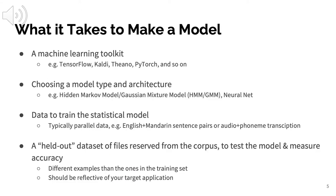To build a speech recognition system, the first thing you need is a machine learning toolkit — there are many available, such as TensorFlow, Kaldi, and PyTorch. Beyond the toolkit, you need to choose a model type and architecture: hidden Markov models, Gaussian mixture models, and neural nets are among the most common for speech recognition. And beyond the toolkit and model type, you need actual data — usually parallel data. In the case of speech recognition, you'll have audio paired with a transcription.